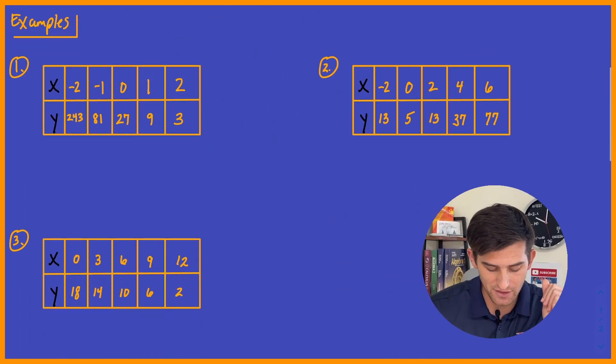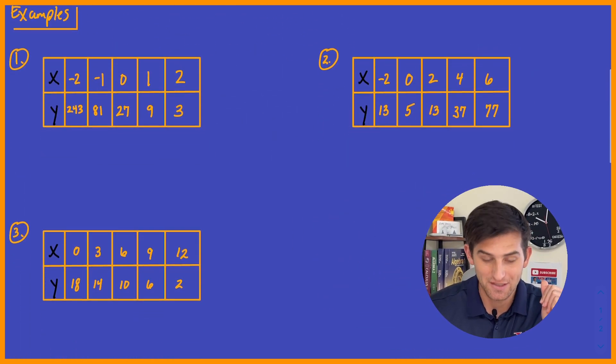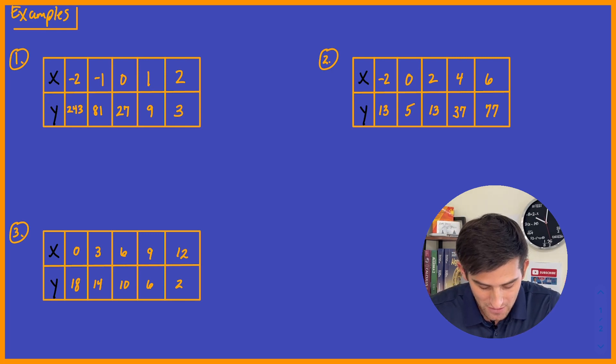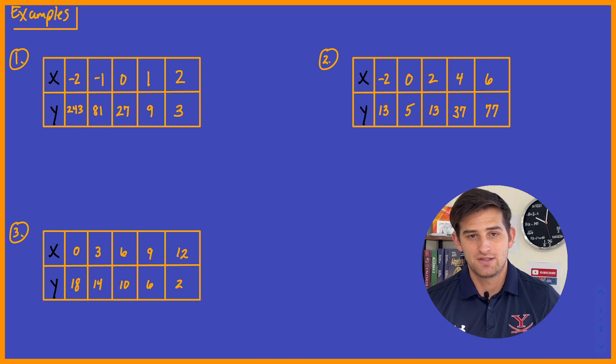So we do have three examples in this video, and you guessed it, one's going to be linear, one's going to be quadratic, and one is going to be exponential. So let's start with number one. With all of these tables of values, we want to make sure that our x values are just increasing by a constant amount, increasing or decreasing.